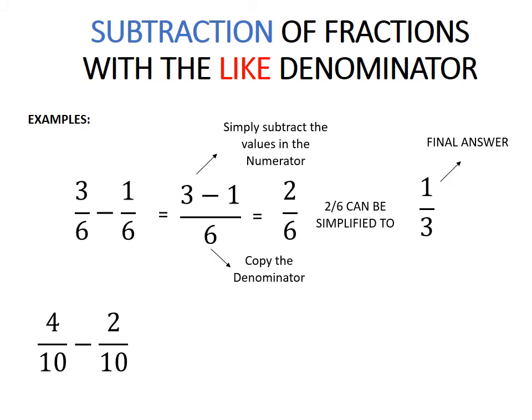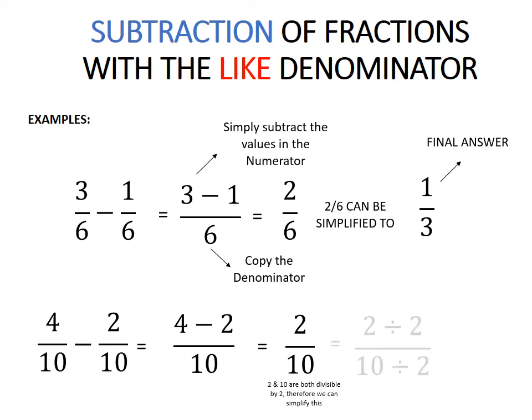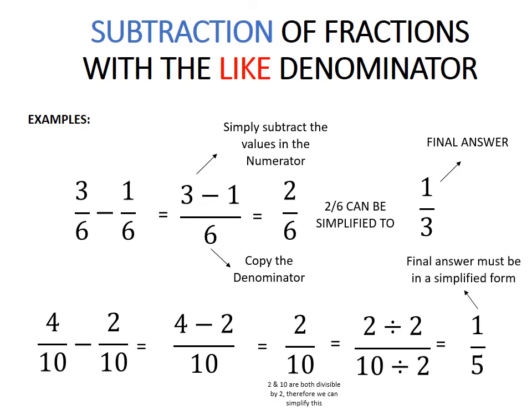Another example: 4 over 10 minus 2 over 10. Copy the denominator and subtract the numerators: 4 minus 2 equals 2 over 10. 2 and 10 are both divisible by 2, therefore we can simplify this. 2 divided by 2 equals 1, and 10 divided by 2 equals 5. The final answer must be in simplified form: 1 over 5.